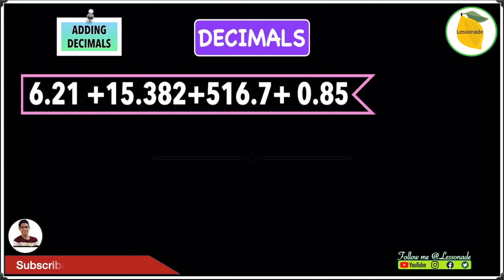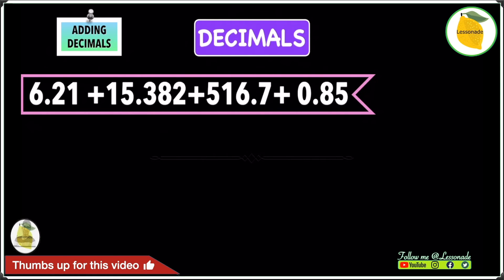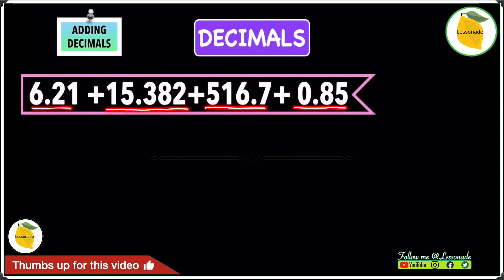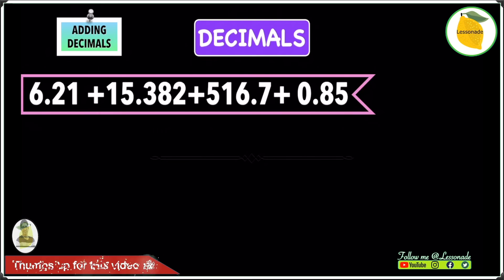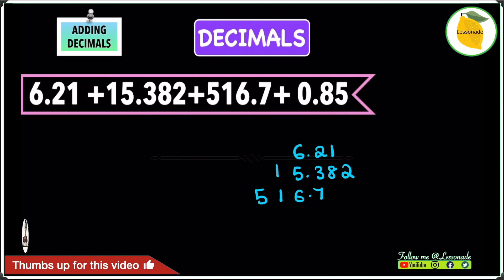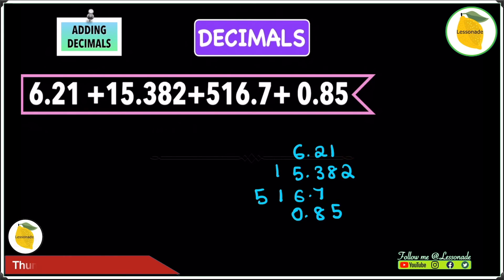Now let's look at this example where we add four numbers: 6.21 plus 15.382 plus 516.7 plus 0.85. We do the same as before but with four decimals. Arrange all numbers making sure all decimal points are in line: 6.21, then 15.382, then 516.7, and finally 0.85.